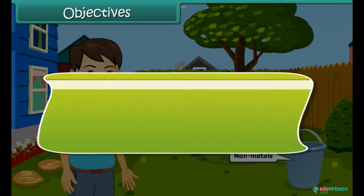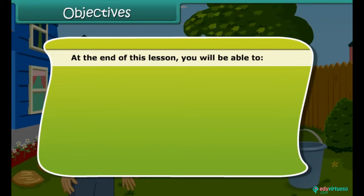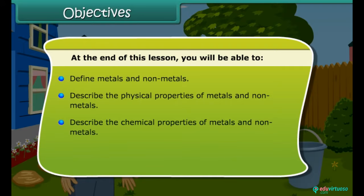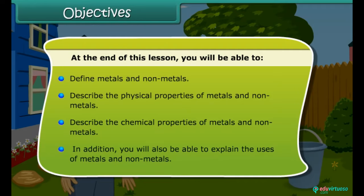Objectives: Friends, at the end of this lesson you will be able to define metals and non-metals. You will also be able to understand the physical properties of metals and non-metals. Besides this, you will be able to describe the chemical properties of metals and non-metals, and in addition, you will also be able to explain the uses of metals and non-metals.